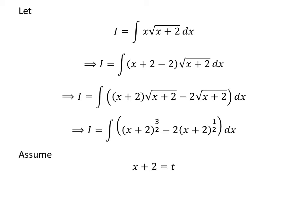Let's further simplify the integral by application of the substitution method. Assume x plus 2 is equal to t. Taking the differential of both sides, the derivative of x plus 2 with respect to x times dx equals dt. Since the derivative of x is 1 and the derivative of constant 2 is 0, differential of x equals differential of t.